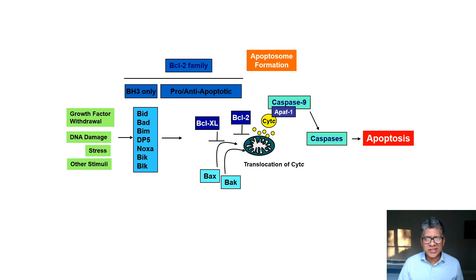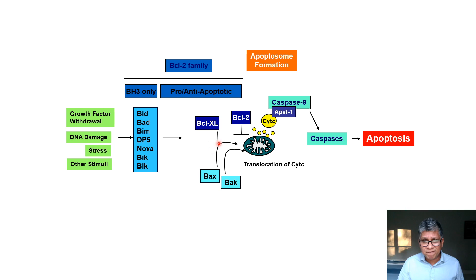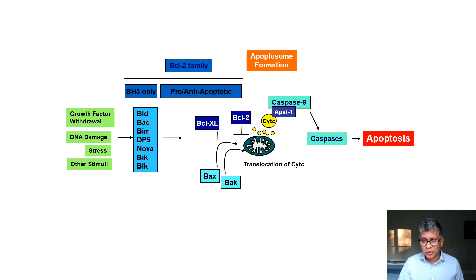Let's talk about how the BCL2 family proteins interact with each other to induce apoptosis. BCL2 and BCLXL are inhibitors of apoptosis; BAX and BAK are inducers. In normal, healthy cells, this system is held in check. BAX and BAK can physically go to the mitochondria and form channels on the mitochondrial outer membrane to promote the release of cytochrome C. BAK is already in the mitochondria, while BAX can shuttle between the mitochondria and the cytosol. BCL2 and BCLXL can prevent the formation of these channels.